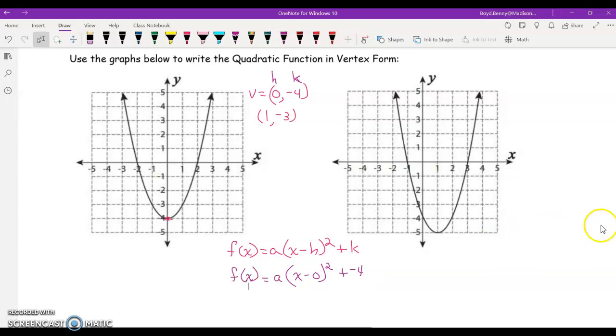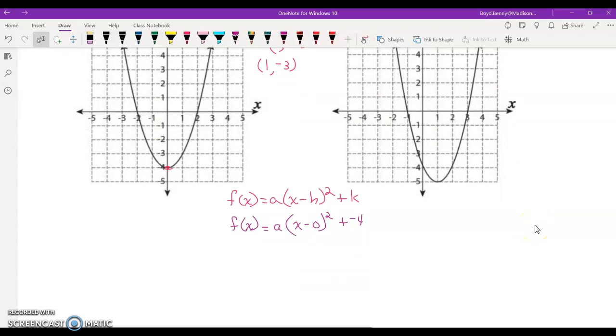Okay, so, the next thing I want to do is substitute the point that I chose on the line. Chose a point on the curve. And I'm going to use that to find out the value of a. Once I have a, h, and k, I can write my equation. So, I'm going to substitute the negative 3 for f(x), which also represents y. I'm going to substitute 1 for x. And I'm going to rewrite that plus negative 4 as a minus 4.